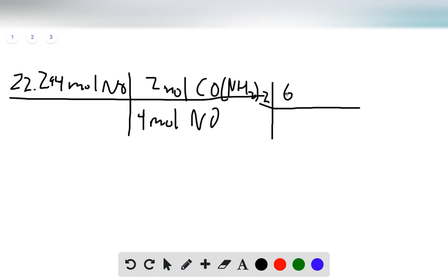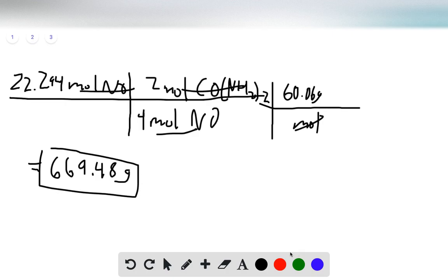We can take the molar mass of urea, which is 60.06 grams per mole. Our moles cancel and we end up with our final answer in grams, which is 669.48 grams. That is our final answer.